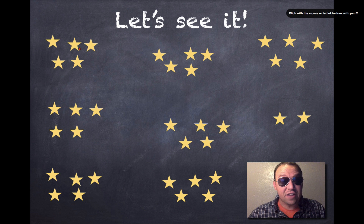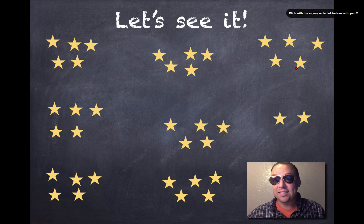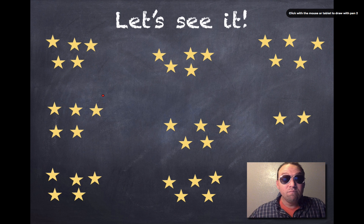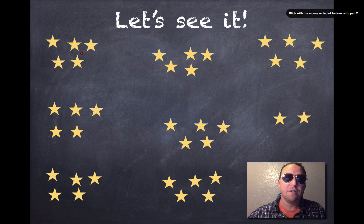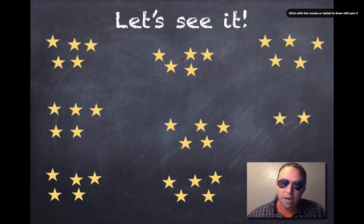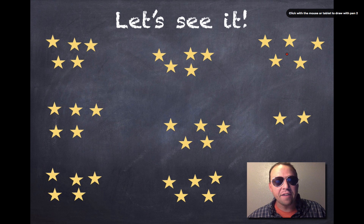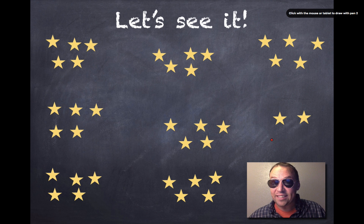So now I've got one, two, three, four, five, six, seven groups of five, and then an extra group of two over here. Let's use some skip counting to find out how many stars we have in all. Let's skip count by fives: five, ten, fifteen, twenty, twenty-five, thirty, thirty-five. And then we can count by ones: thirty-six, thirty-seven.